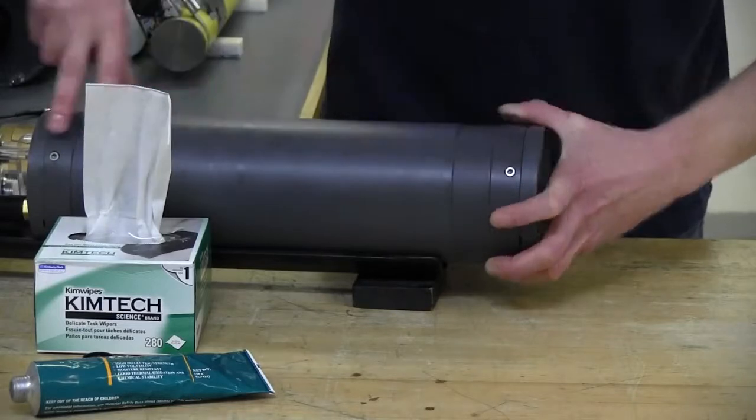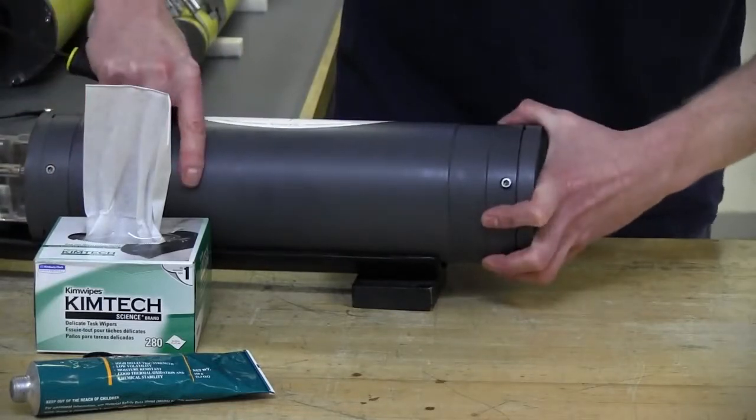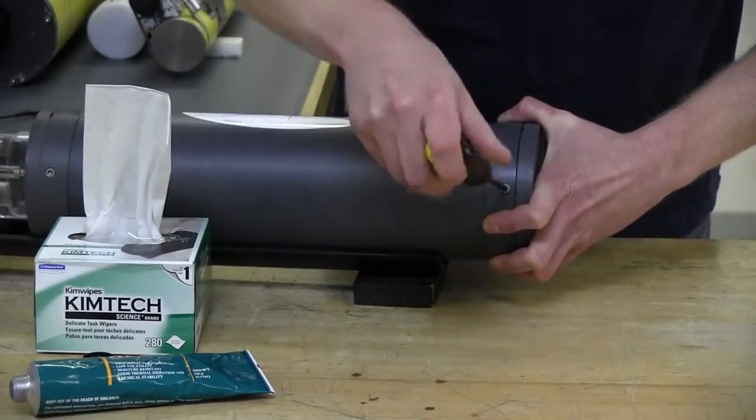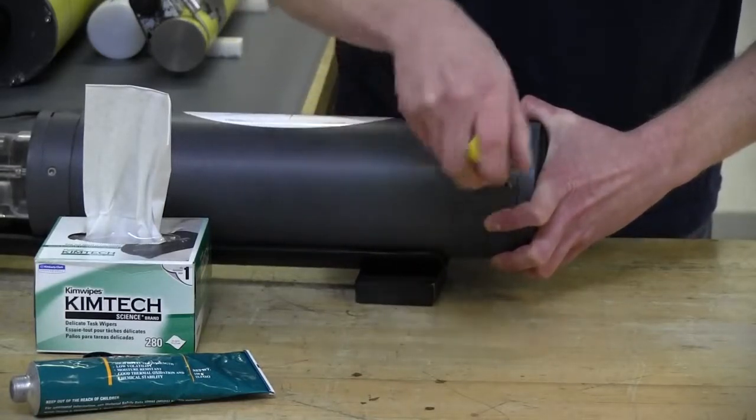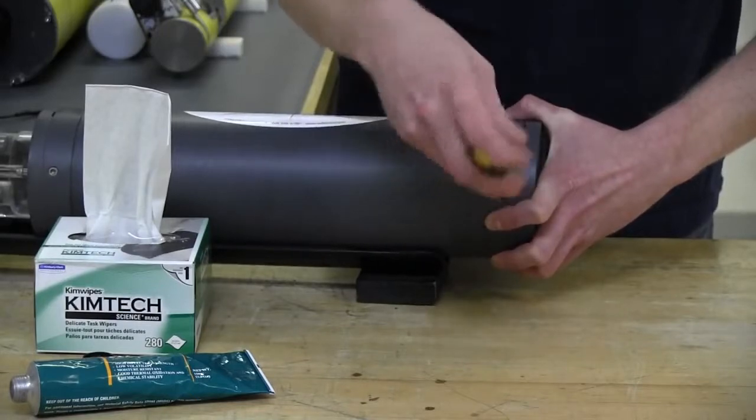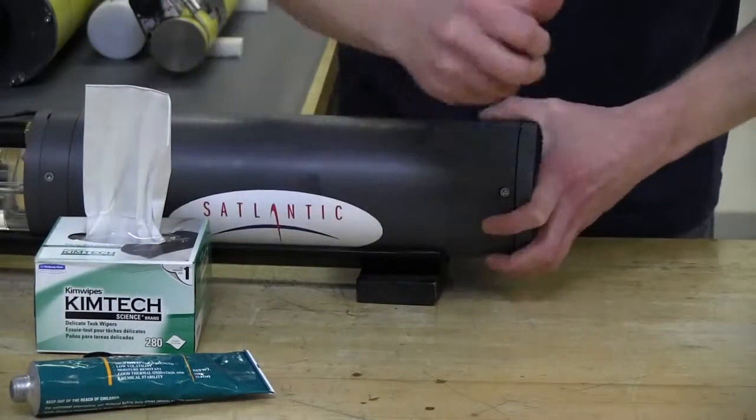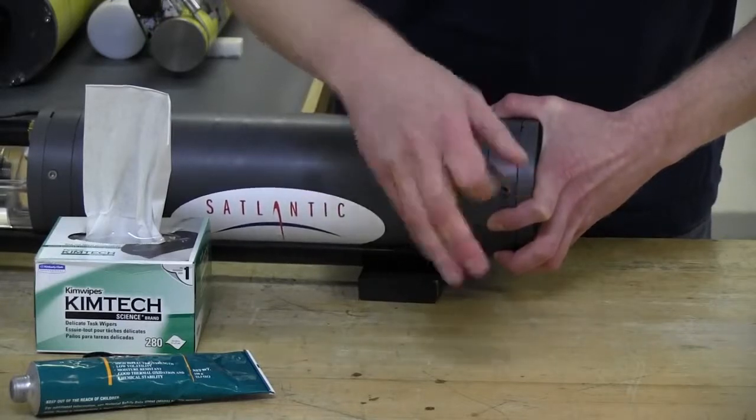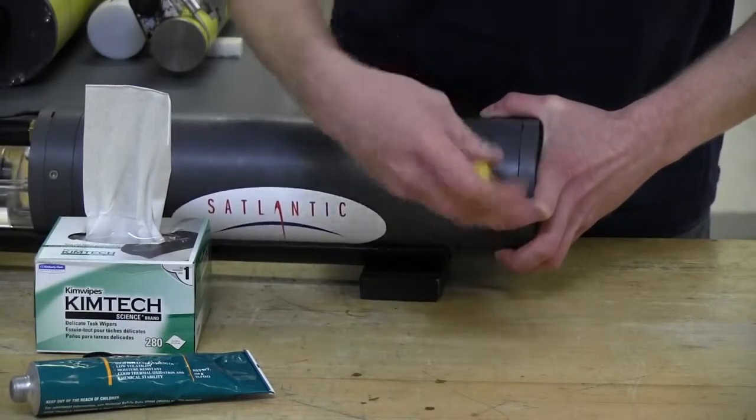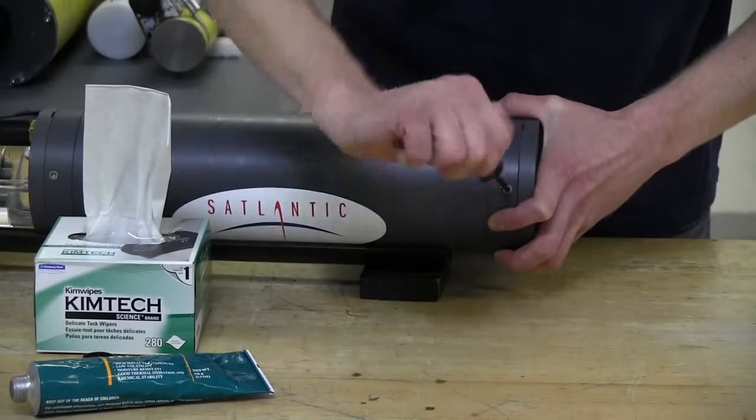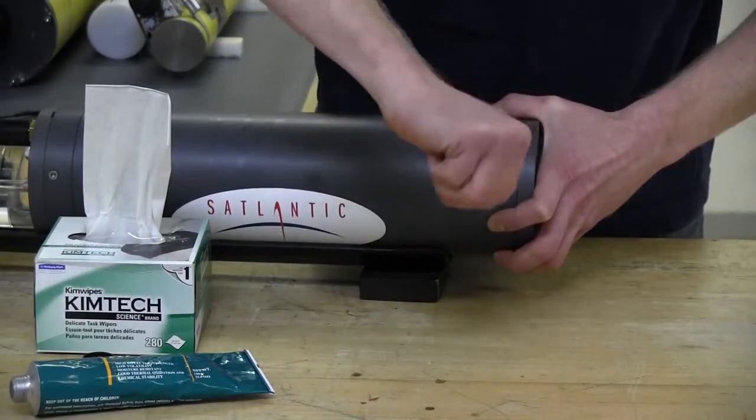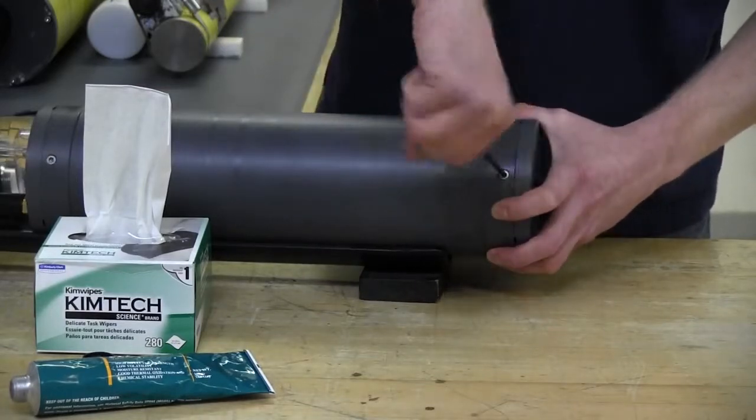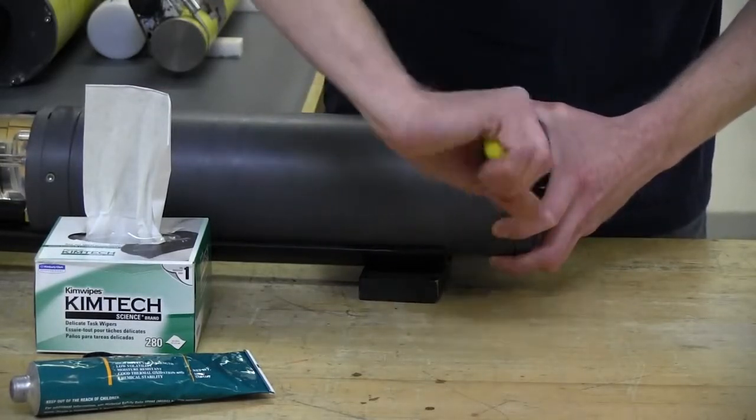Take one screw after another and screw them to a point where the head of it is just inside the lip of the pressure housing here. Then we can go around and snug them up one by one. That feels about right. Just bring it right past the surface. You don't want to tighten these too much. You don't want to strip anything.